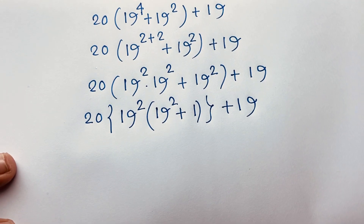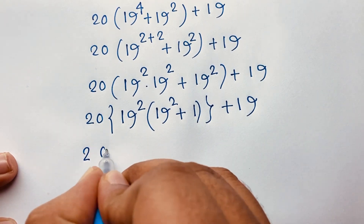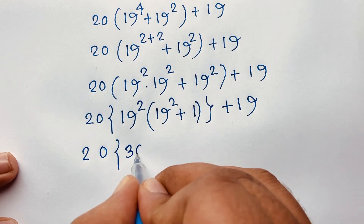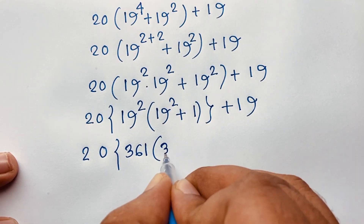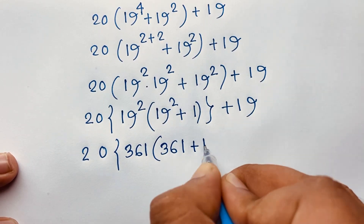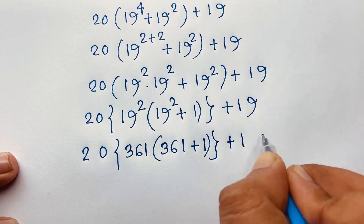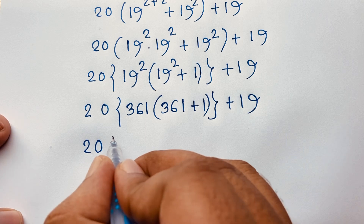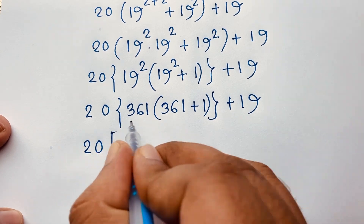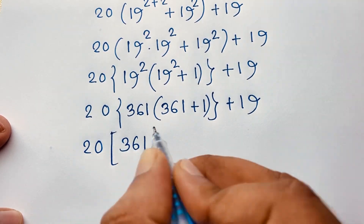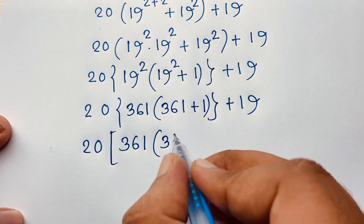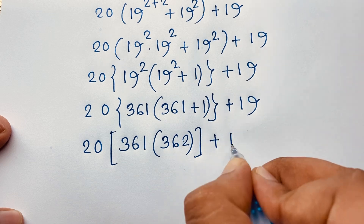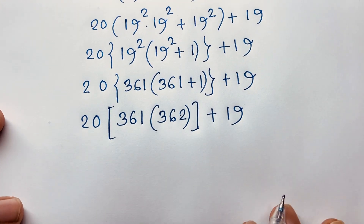Now, 19 power 2 equals 361. So the expression becomes 20 times 19^2 times (361 + 1) plus 19, which is 20 times 361 times 362, plus 19. Simplifying: 361 plus 1 is 362, and we carry the plus 19.